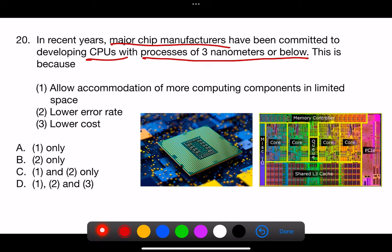The correct answer is A, 1 only. The primary advantage of developing CPUs with processes of 3 nanometers or below is the ability to fit more computing components into a limited space, which increases the density of transistors and thereby potentially increases the performance and energy efficiency of the chip.